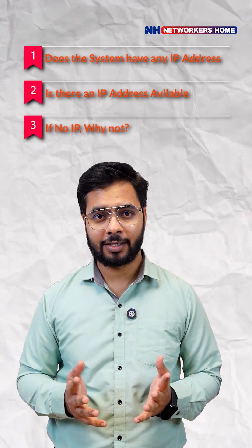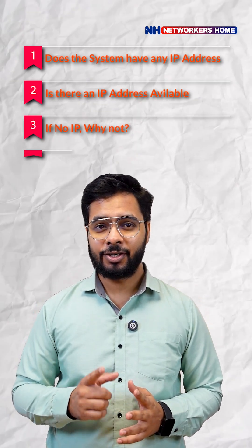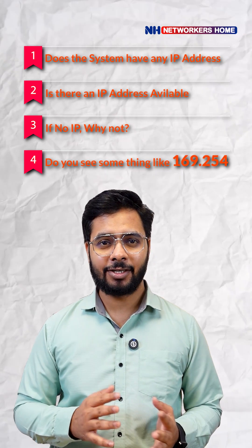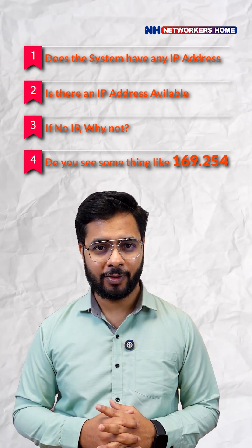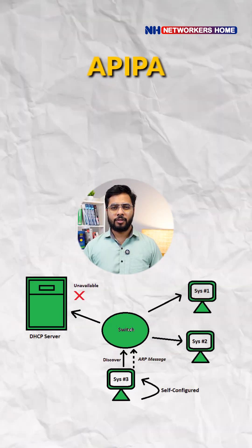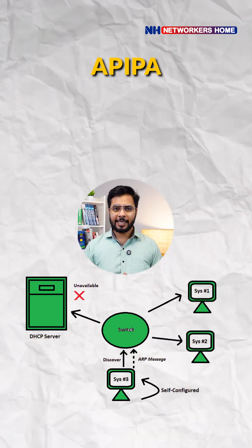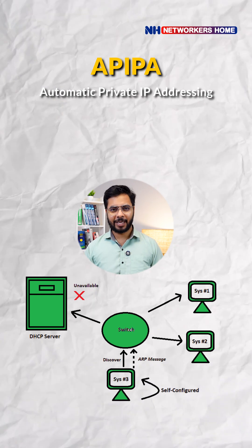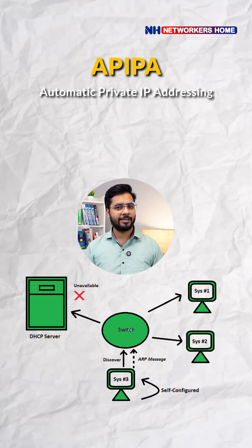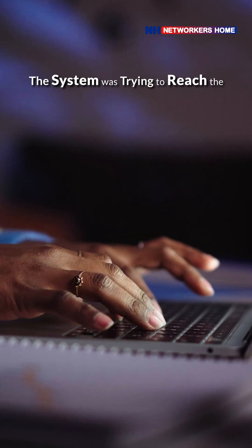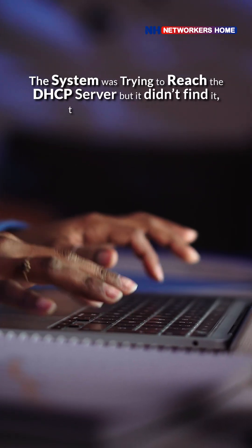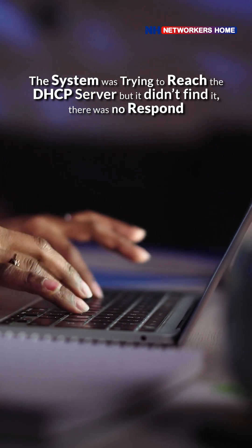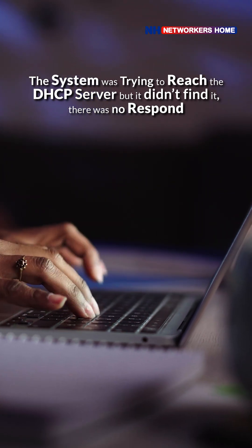If there's no IP, why not? Or do you see something like 169.254? If you see that, that's APIPA — Automatic Private IP Address. It simply means the system was trying to reach the DHCP server, but it didn't find it. There was no response.